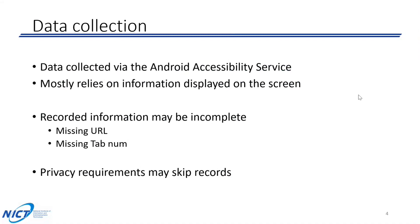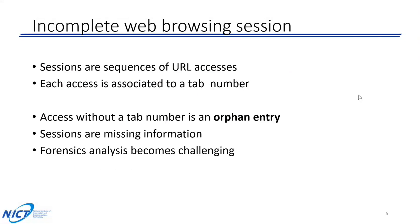There are also privacy requirements: by default we do not collect information related to mail services like Gmail, and we do not collect accesses to bank websites to preserve user privacy. Additionally, because it's a mobile phone, you might not have a perfect collection process—the sensor may lag or have insufficient computing power—leading to an incomplete data collection.